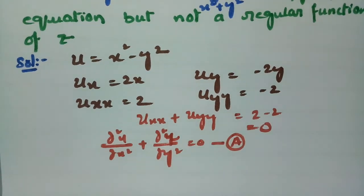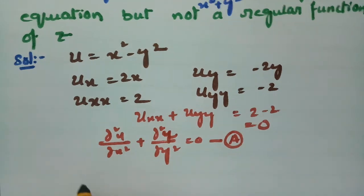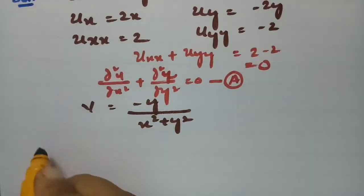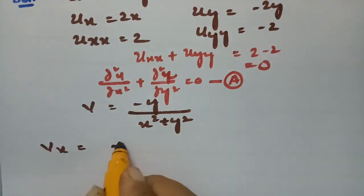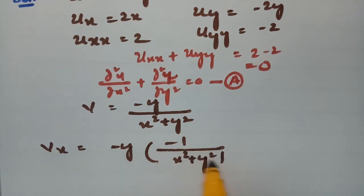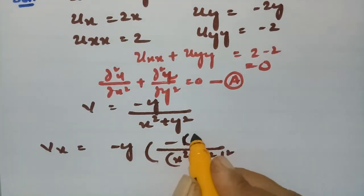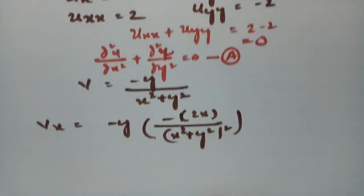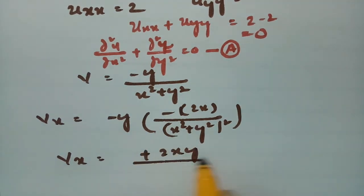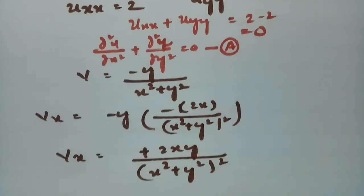Next, coming to v. What is v here? v = -y / (x² + y²). If I make a derivative with respect to x, -y is a constant. Treating it like 1/(x² + y²), and differentiating, we use the chain rule and get: vx = 2xy / (x² + y²)².